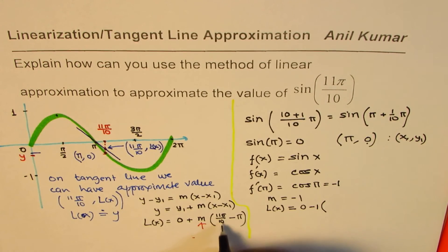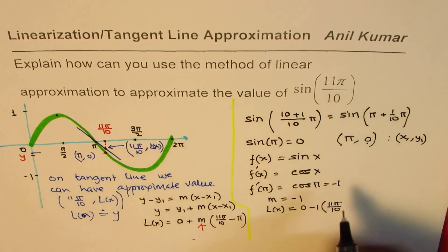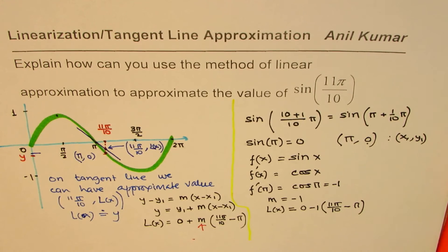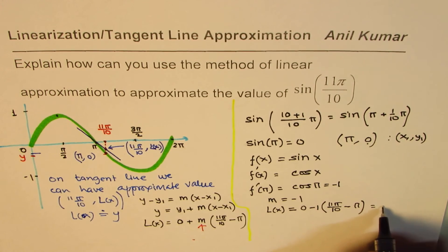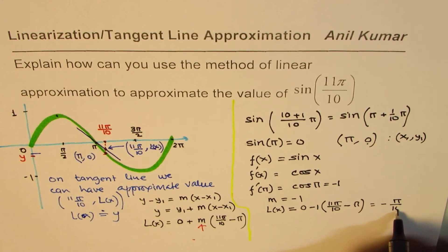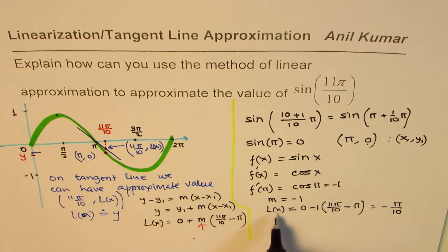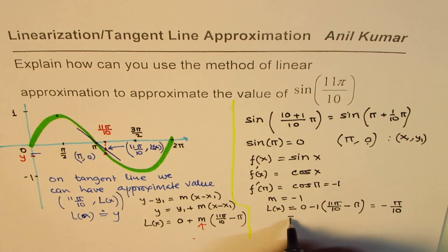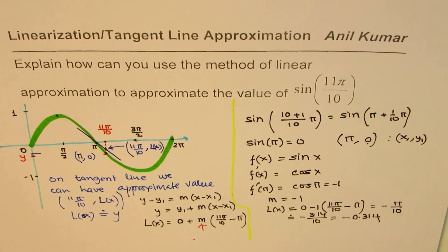Now we know slope m = -1 and y₁ = 0. So L(x) = 0 + (-1)(11π/10 - π) = -1 × (π/10) = -π/10. So the approximate value is -π/10, which is approximately -3.14/10 = -0.314.